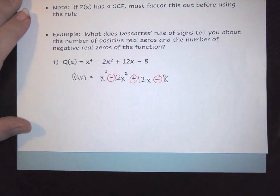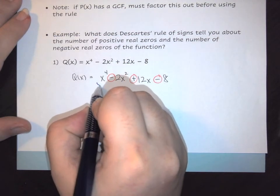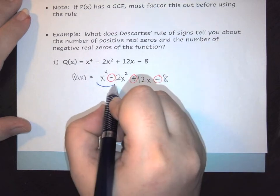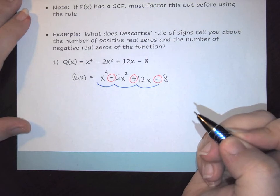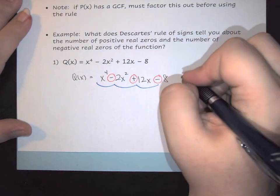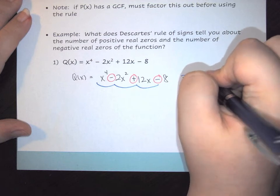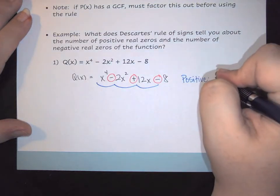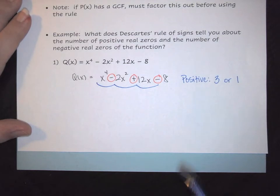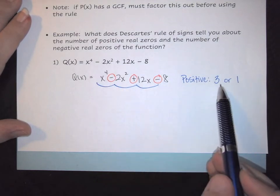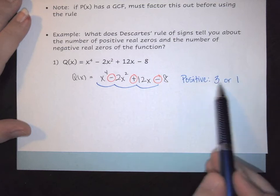Notice that we go from positive to negative - that's one change. Negative to positive is two changes. Positive to negative is three changes. So for positive zeros, we have three sign changes, and counting down by positive even integers gives us 3 or 1.